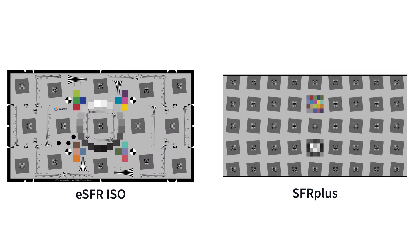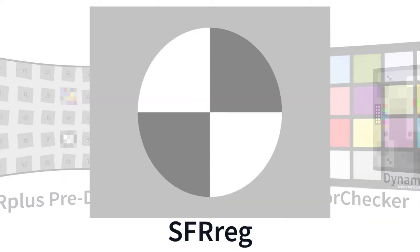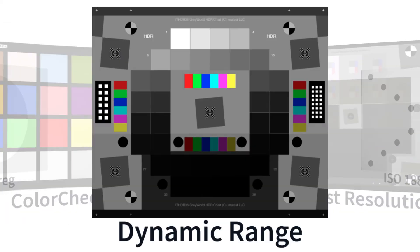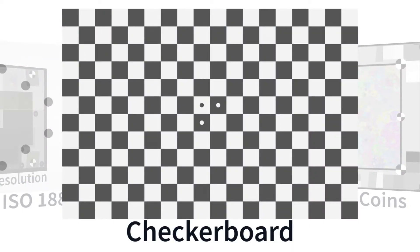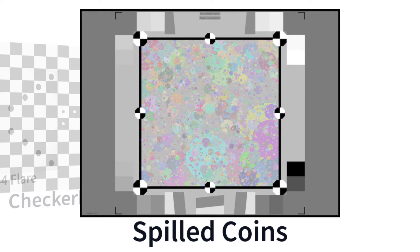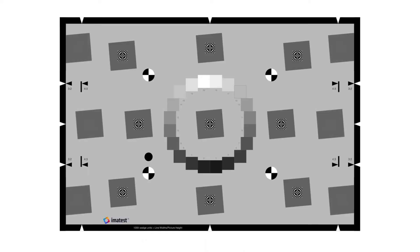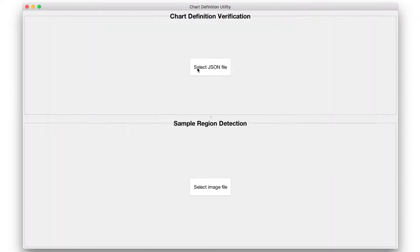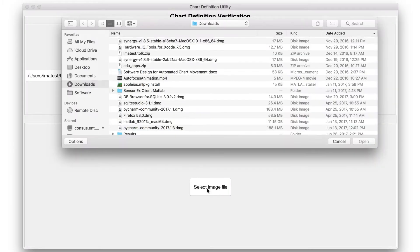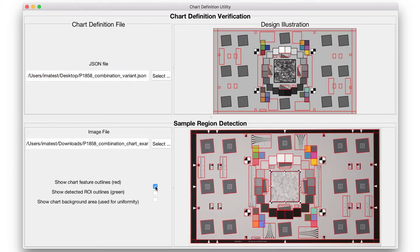Imatest's ESFR ISO and SFR Plus charts contain many of these features on a single chart, allowing you to test for many image quality factors from a single image. Other test charts are designed for the comprehensive analysis of a specific image quality factor, such as checkerboard for distortion or spilled coins for texture response. If you can't find a target that meets all of your needs, a customized target can be designed which can be automatically detected and analyzed by our arbitrary charts module.